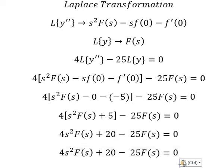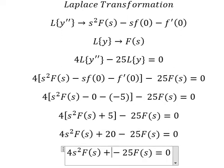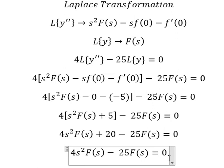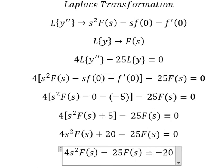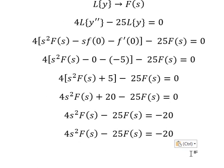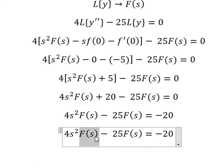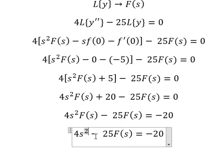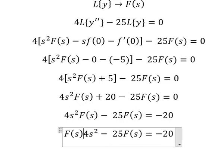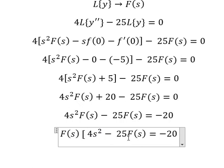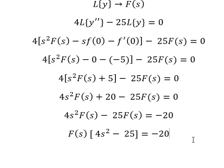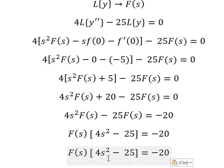So we have s squared times capital F of s plus 20. We put the 20 on the right side. Capital F of s — we can factor it out. Next, we divide both sides by this expression.